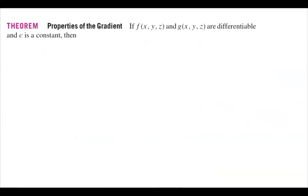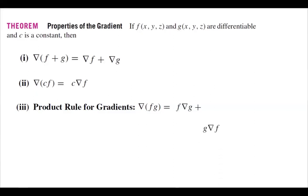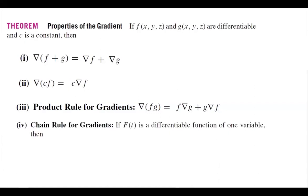Properties of the gradient: suppose f and g are differentiable functions and c is a constant. Then the gradient of (f + g) equals the gradient of f plus the gradient of g. The gradient of c·f equals c times the gradient of f. The product rule for gradients: the gradient of (f·g) equals f times the gradient of g plus g times the gradient of f. You also have the chain rule for gradients: if f(t) is a differentiable function of one variable t, then the gradient of f(f(x,y,z)) equals f′(f(x,y,z)) times the gradient of f.